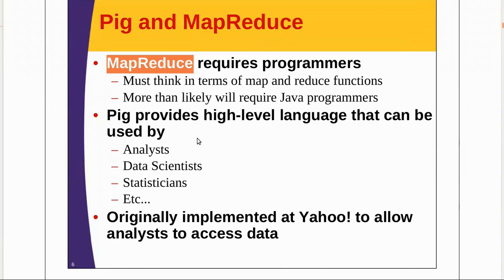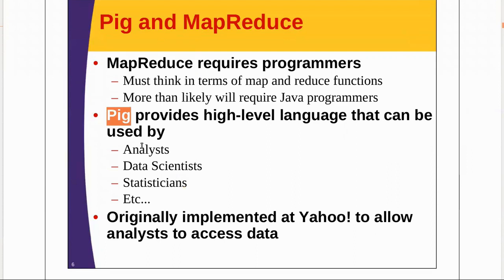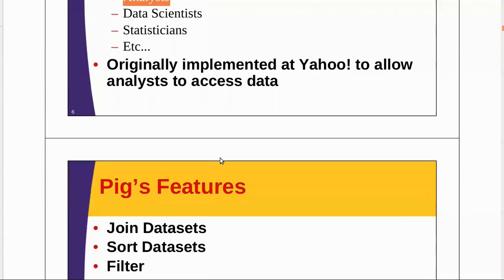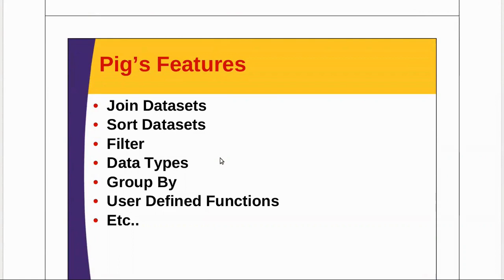PIG provides a high-level language that can be used by analysts, data scientists, and statisticians. It's easy for analyzing large data sets. PIG was originally implemented at Yahoo to allow analysts to access data. Looking at PIG's features: if you know SQL, you can easily understand what PIG offers — joining data sets, sort, filtering data sets, data type support, and group by clauses.